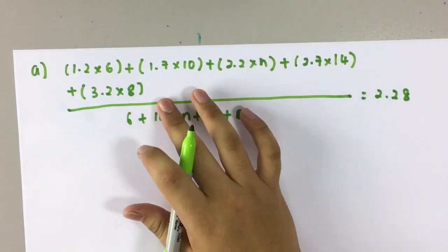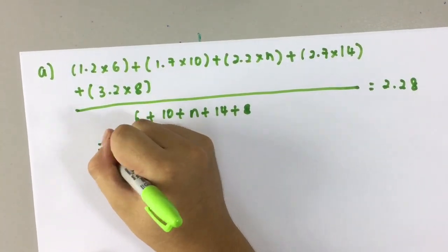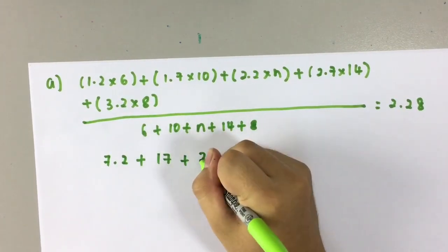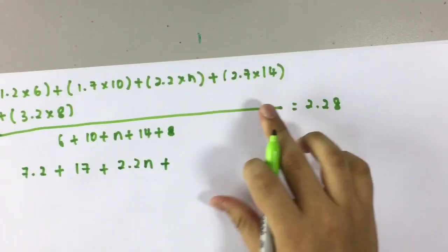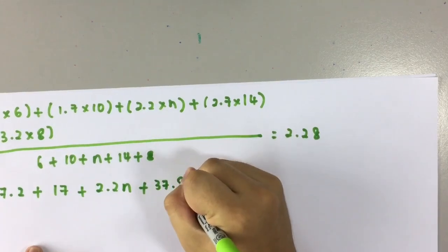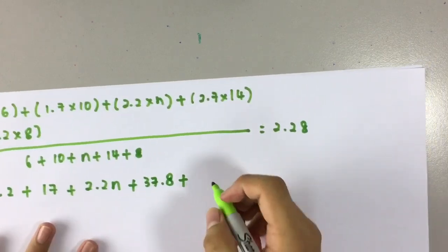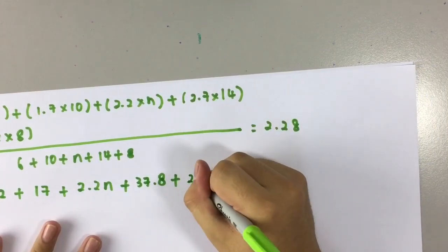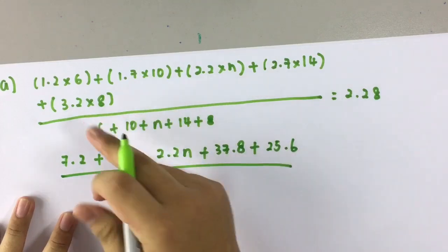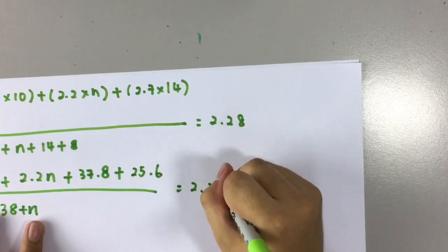So 1.2 times 6, we got 7.2. Then 1.7 plus 2.2n plus 2.7 times 14, we got 37.8. Then we plus again, 3.2 times 8, this is 25.6. Divide sum of this, 38 plus n equals to 2.8.